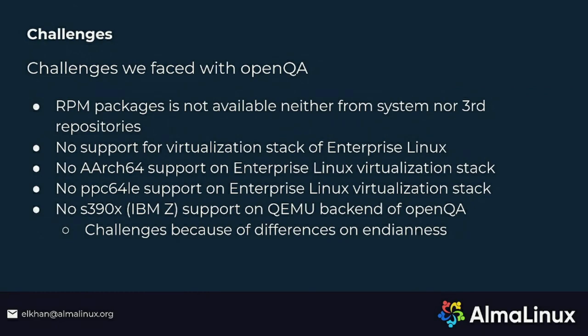So, the challenges we faced with OpenQA. An RPM package wasn't available, neither from the system nor from third-party repositories such as EL repo, RPM Fusion, and so on. Because the entire virtualization stack in enterprise Linux is built and works differently, there was no support for us — it was different from what you find in openSUSE and Fedora. And this virtualization stack didn't have support for the OpenQA backend for ARM and PPC.